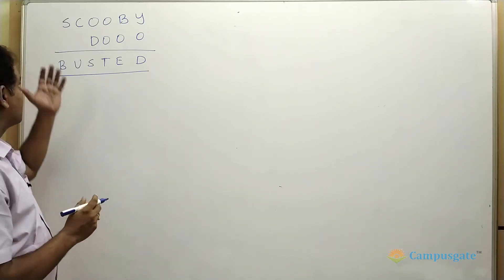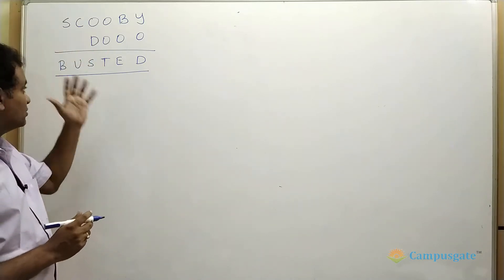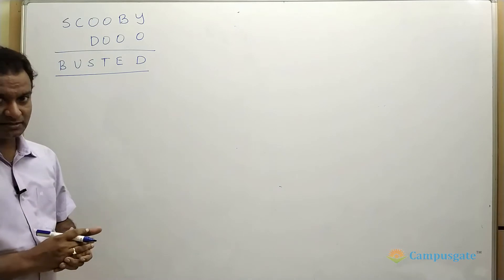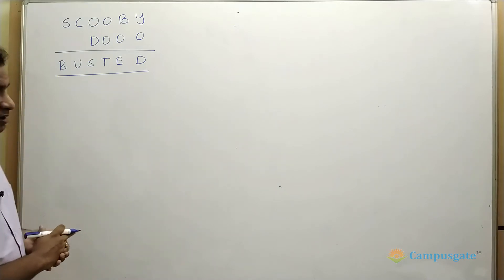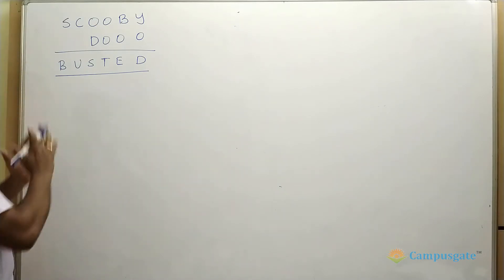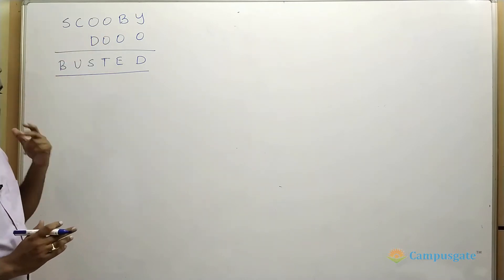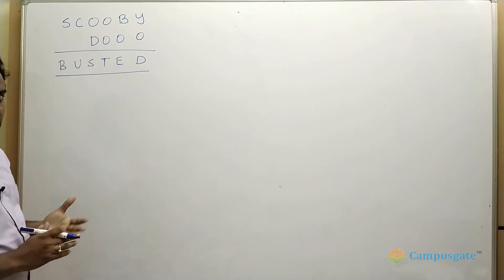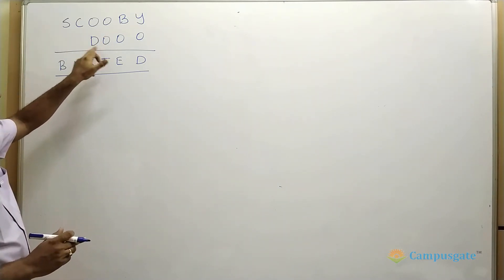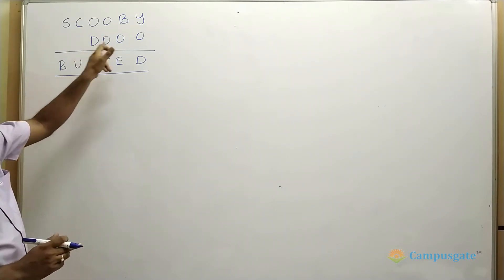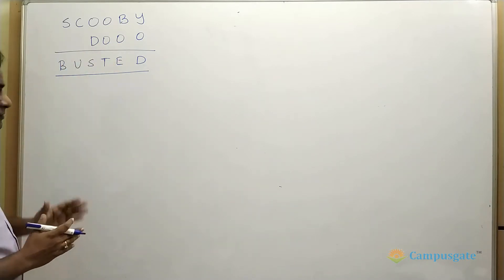In this question, SCOOBY + DOBY = BUSTED. This is an alphanumeric question. SCOOBY is a six-digit number; when added with another four-digit number, we get a six-digit number.